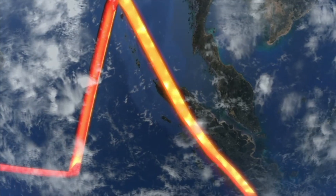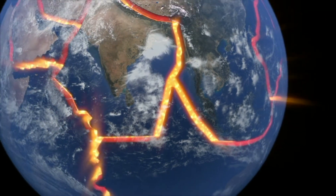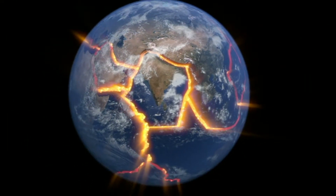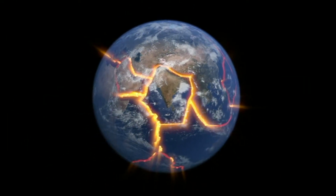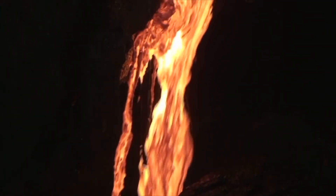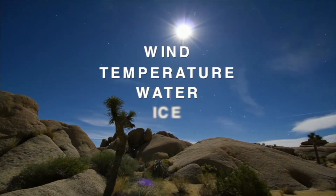At some tectonic plate boundaries, rocks are subducted deep below Earth's surface. As they melt, these rocks become magma, which returns to the surface, starting the cycle anew. Although rocks are formed and transformed through a diverse set of natural processes, they're all part of this rock cycle. The rock cycle is a model of the processes that create and transform rocks. Aside from forces within Earth's interior, processes on Earth's surface involving wind, temperature, water, and ice all play a role in the rock cycle.